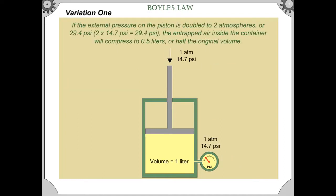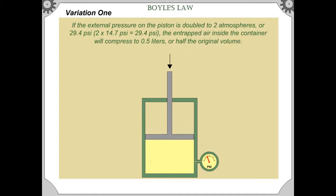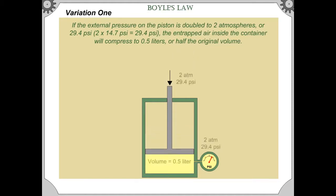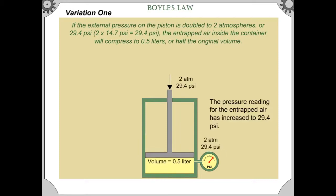If the external pressure on the piston is doubled to 2 atmospheres or 29.4 psi — 2 times 14.7 psi equals 29.4 psi — the entrapped air inside the container will compress to 0.5 liters, or half the original volume. The pressure reading for the entrapped air has increased to 29.4 psi.